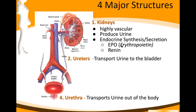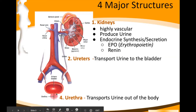The kidney also has a connection with the endocrine system — it produces and secretes hormones. We've talked about EPO already when we covered the skeletal system: when oxygen levels are low, the kidneys release EPO, which signals the bone marrow to start making red blood cells. The kidney also releases renin, which plays a role in blood pressure by regulating blood volume.